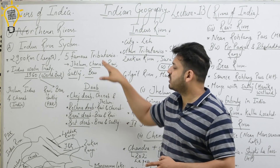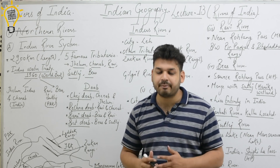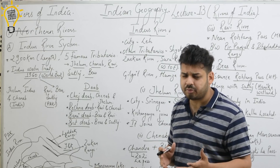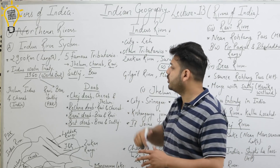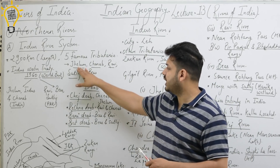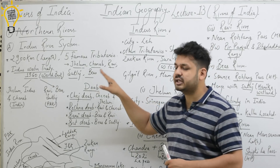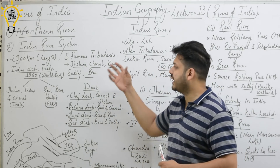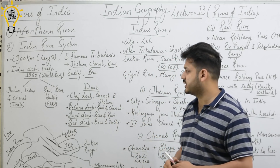The Indus River has 5 famous tributaries which you must remember: Jhelam, Chenab, Ravi, Satlaj, and Vyash (Beas). These are the 5 famous tributaries of the Indus River System.